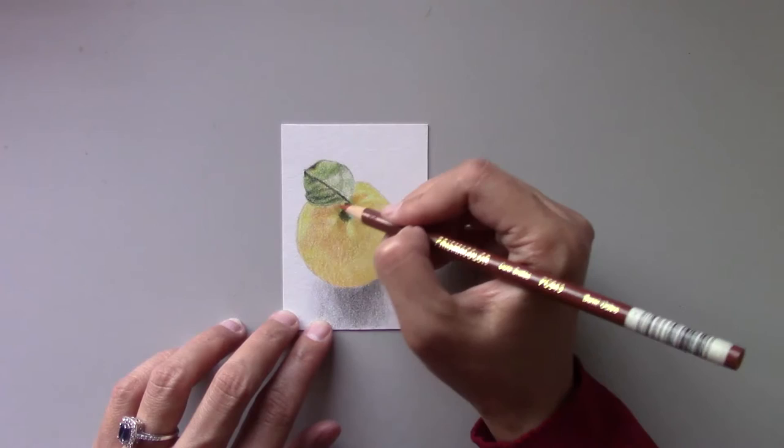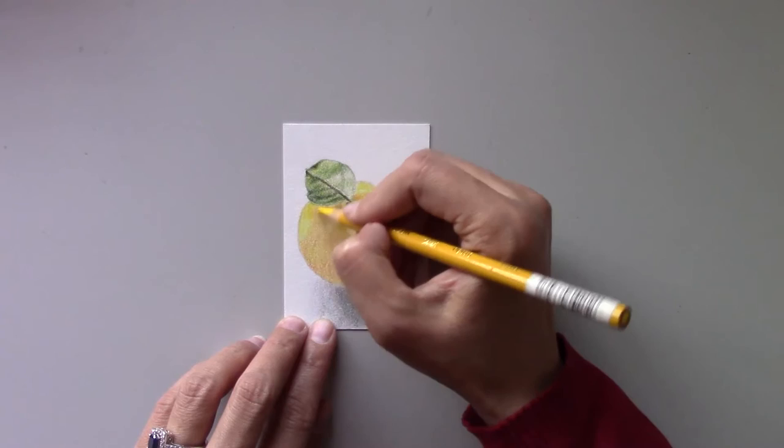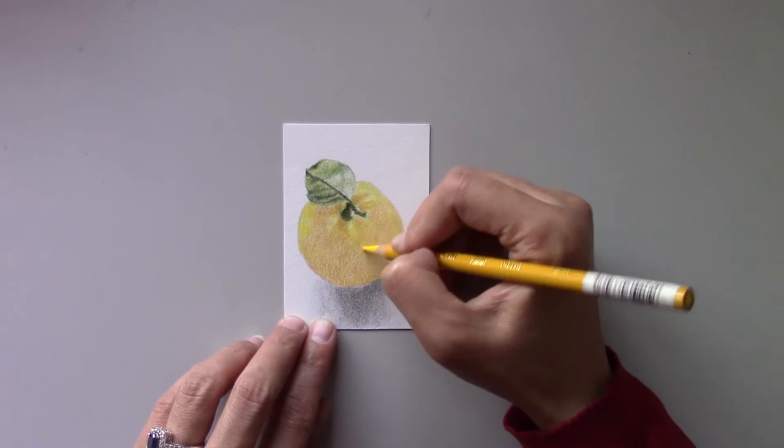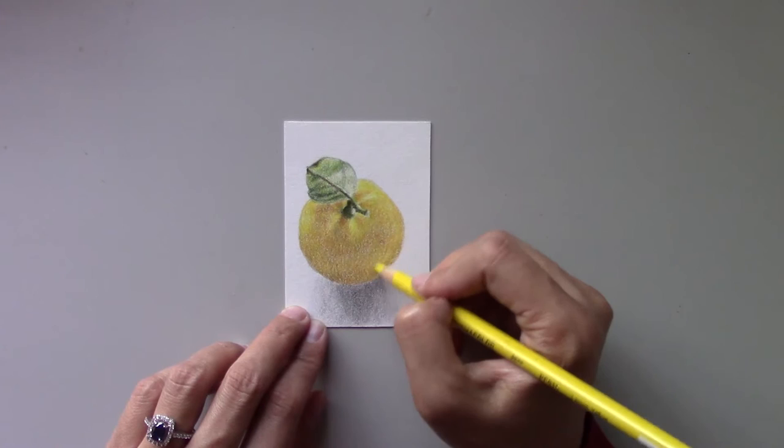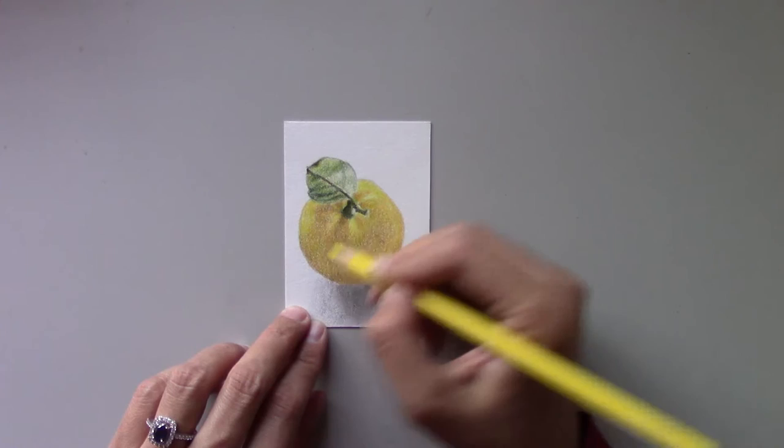I go over the shadows with burnt ochre using light pressure and a vertical stroke. To increase the yellow color on the lightest areas of the lemon, layer with canary yellow using medium pressure. Now darken the shadows at the bottom lemon with dark brown. I also layer lemon yellow again, and this time I burnish the light areas with medium pressure.